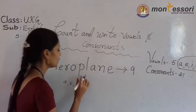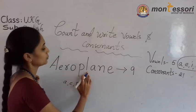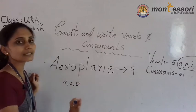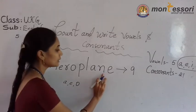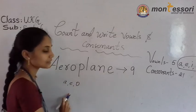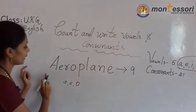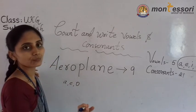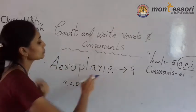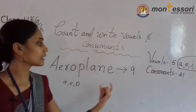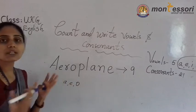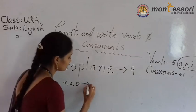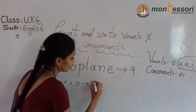Very good. P — vowel. L — vowel. A — already A we wrote. Don't write it again here. Don't write double-double letters. Next, N. Not a vowel. E — already written. So how many vowel letters are there? A, E, O. Here A and E are repeated — don't count them again. Only count the vowel letters once. A, E, O — how many letters? Three vowel letters.